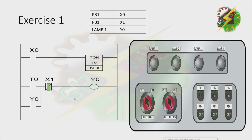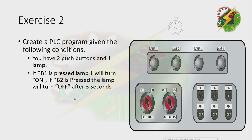Now let's go to exercise 2. Create a PLC program given the following conditions. You have 2 push buttons and 1 lamp. If PB1 is pressed, lamp 1 will turn on. If PB2 is pressed, lamp 1 will turn off after 3 seconds.